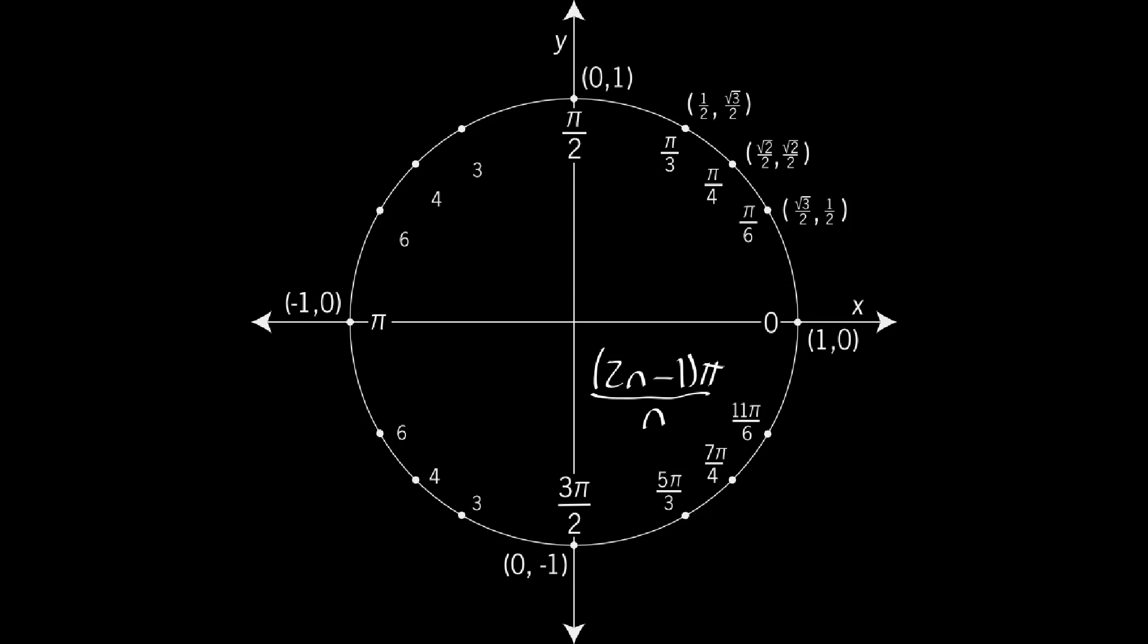Similarly, in the second quadrant, the top number is always one less than the bottom number, and in the third quadrant, the top number is always one more than the bottom number.